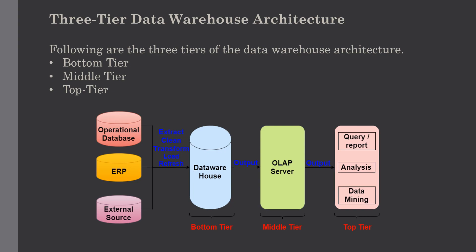The last tier is the top tier, which is the front-end client layer. This layer holds the query tools, reporting tools, analysis tools, and data mining tools — for example, Power BI Desktop or Informatica, which are used for reporting and analysis. The following diagram shows the three-tier architecture: the bottom tier contains the data warehouse database server, the middle tier contains the OLAP server, and the top tier contains the queries, reporting, analysis, and data mining tools.